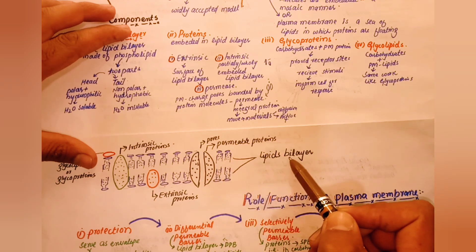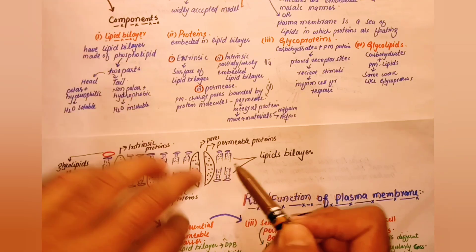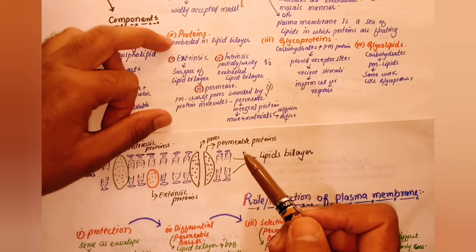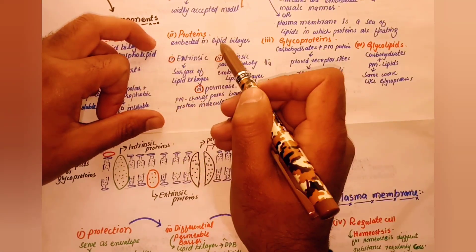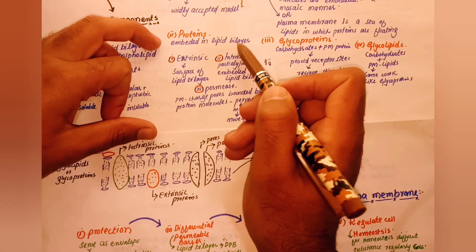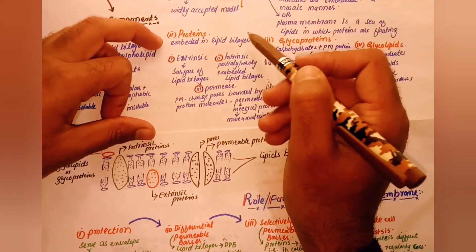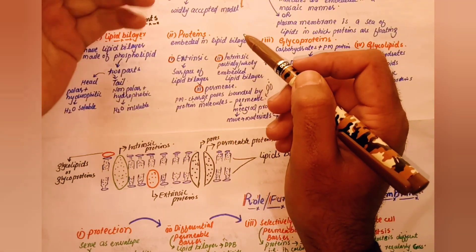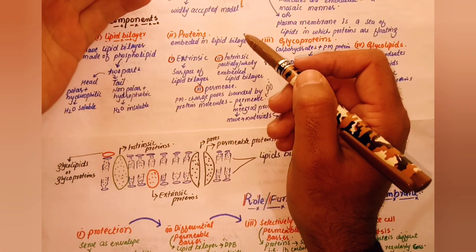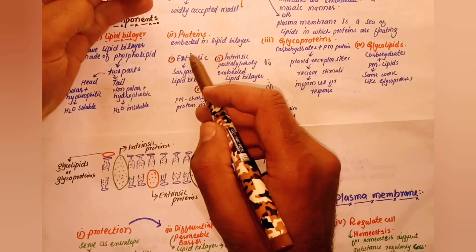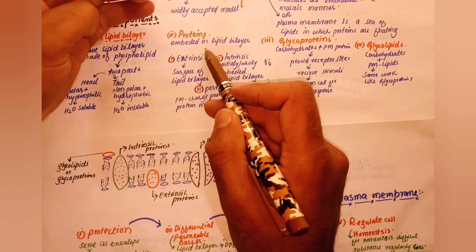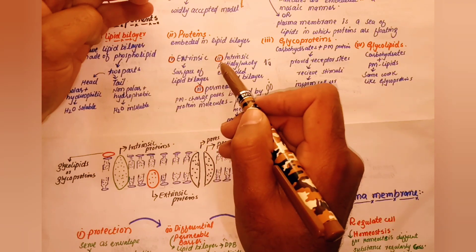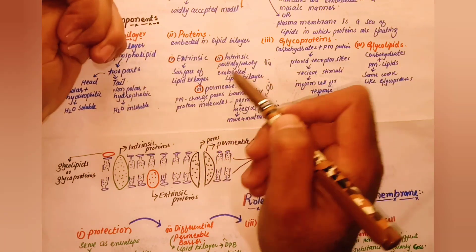Proteins are embedded in the lipid bilayer. There are three types of proteins in the plasma membrane: extrinsic protein, intrinsic protein, and integral protein.